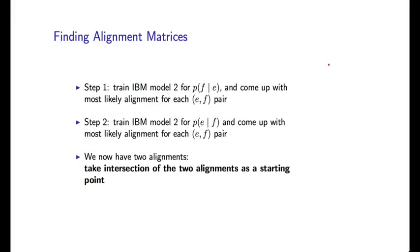So that was a recap of how we can use the IBM models to derive these alignments on training data sentences. In reality, though, there are two problems.